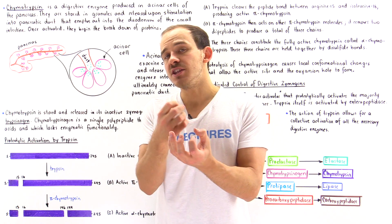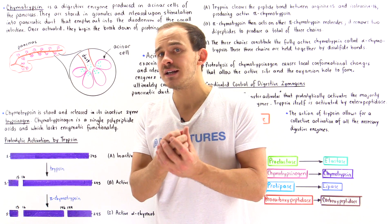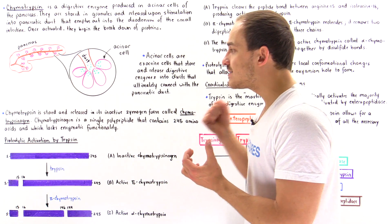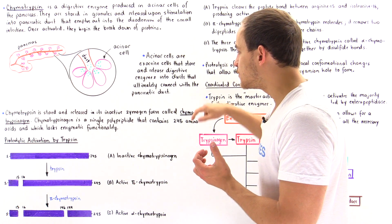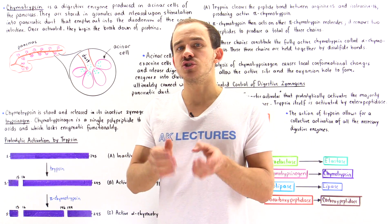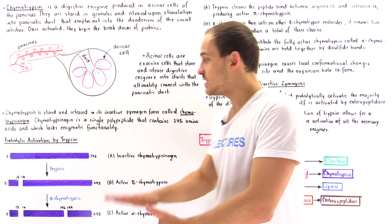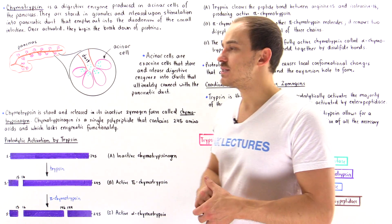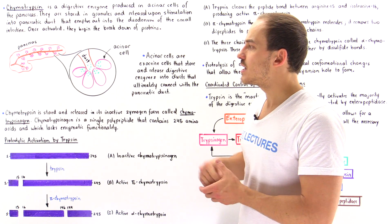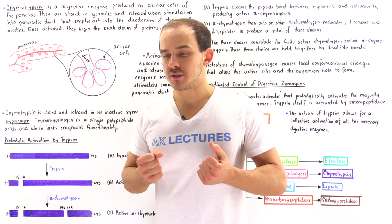The zymogen is not in the proper conformation to fit the substrate molecule. So chymotrypsinogen must be activated proteolytically — we'll see how that happens in just a moment. First, let's discuss where the chymotrypsinogen is actually formed.